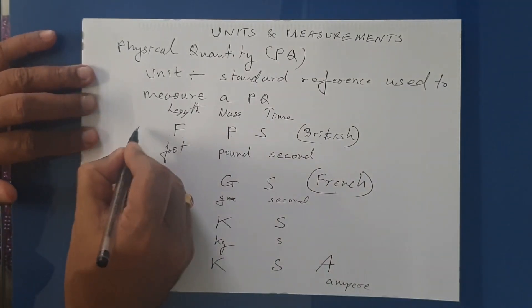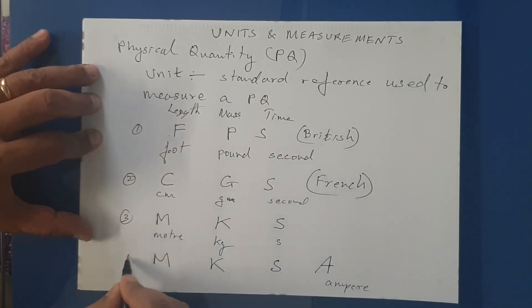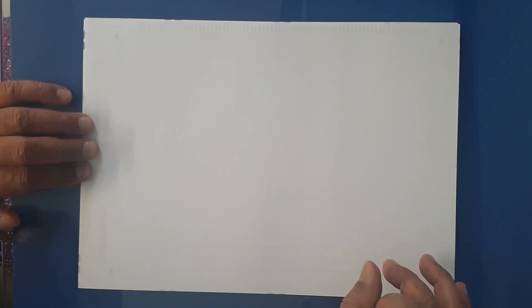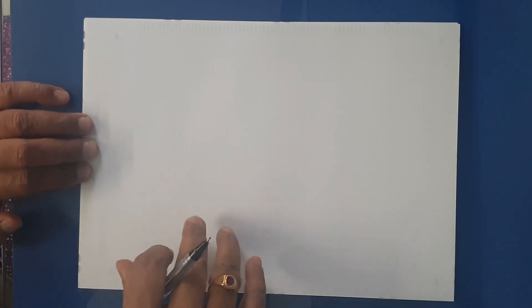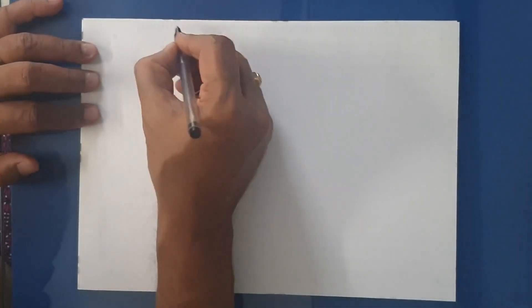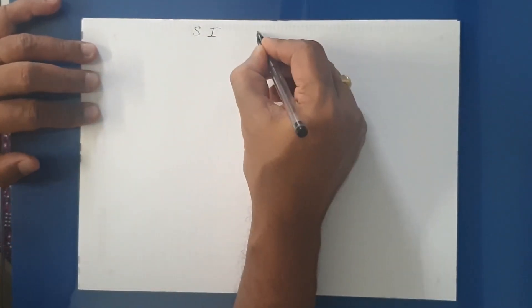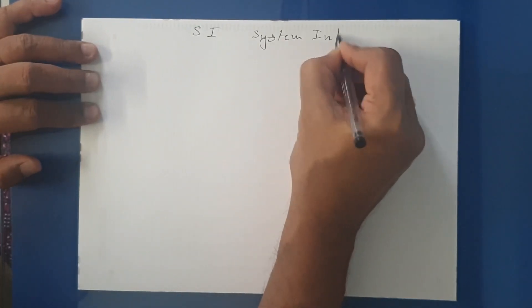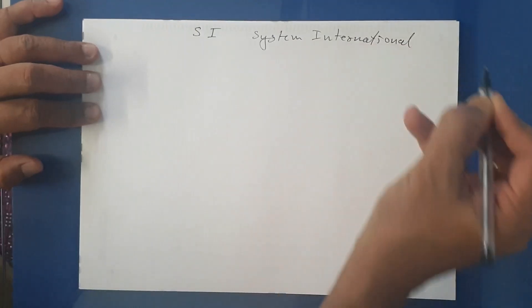So how many different systems did we have? One, two, three, four. Since different countries were following different systems of units, it was difficult for transactions between countries — one country might export a produce in pounds and others import it in kilograms. Conversions and transactions were difficult. So representatives from all countries met together to decide upon a common system of units so that the entire world would follow it. That system was called SI — Système International.